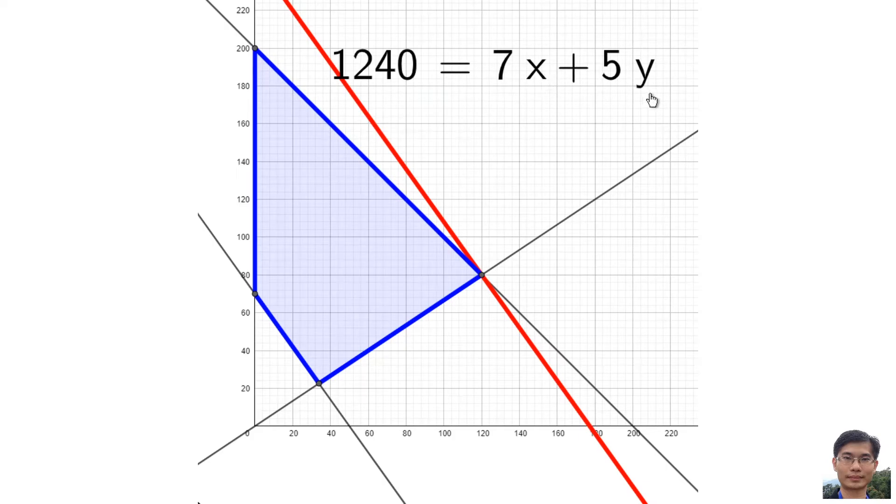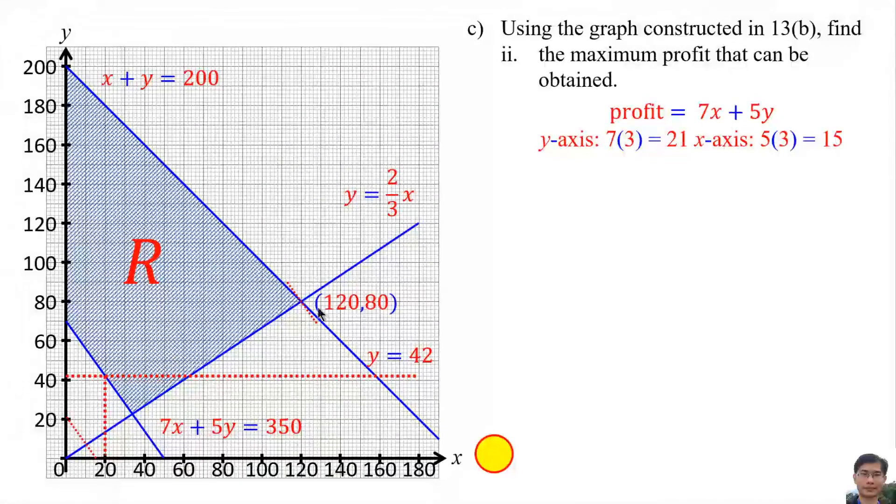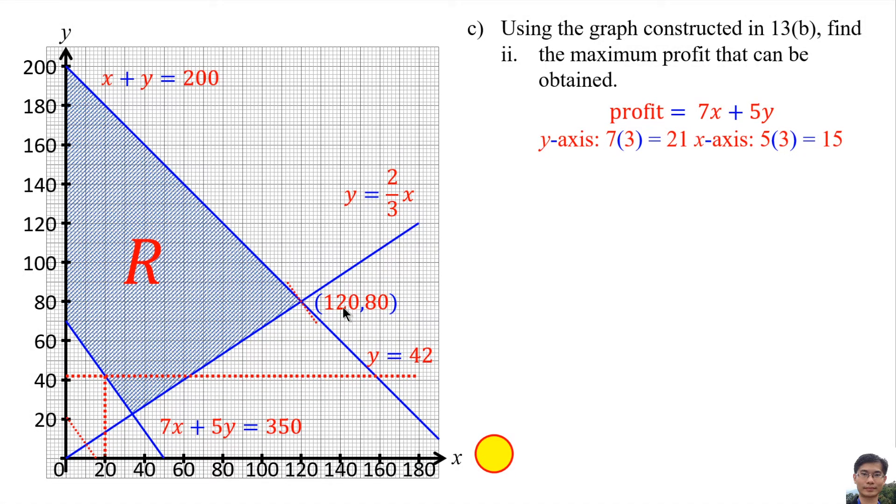We define the values of x and y. The x and y is 120 and 80. So we substitute the value of x and y into the equation. And so we get RM1,240.